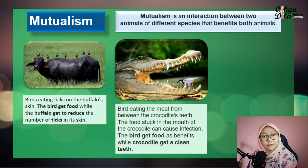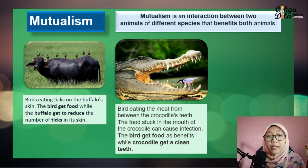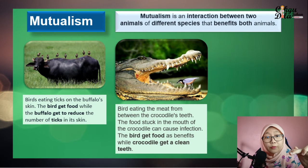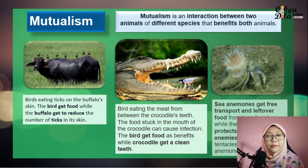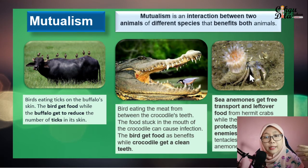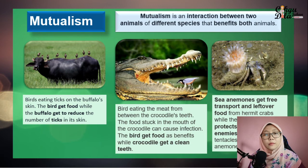Another example: a bird eats the meat stuck in the mouth of the crocodile. The bird gets food and the crocodile gets a clean mouth — the bird acts like a dentist for the crocodile. We also have sea anemones and the hermit crab: the sea anemones get food transport and leftover food, while the hermit crab is protected by the sea anemones' poisonous tentacles.